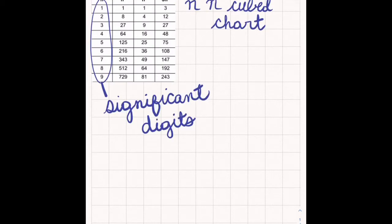So in the second column we have N cubed. We can think of it as our significant digits cubed. So that we could say 1 is 1 times 1 times 1 equals 1. The same for 2 equals 2 times 2 times 2 equals 8.